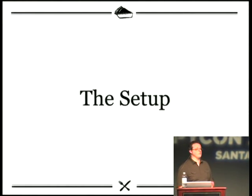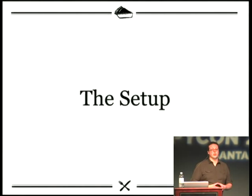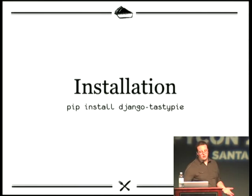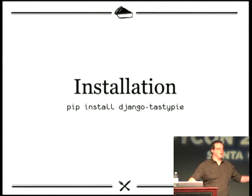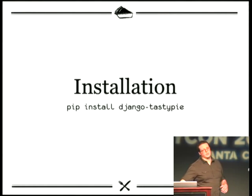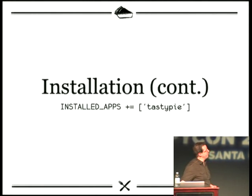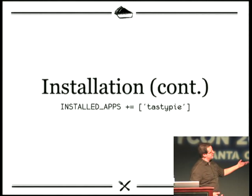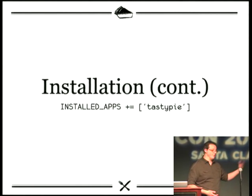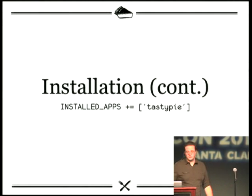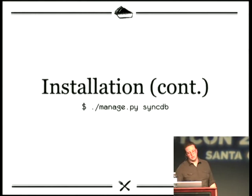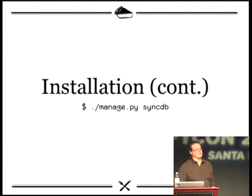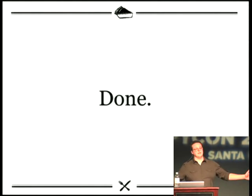For those who have never used TastyPie before, let's talk about a sample setup. Installation is pretty easy — you just pip install django-tastypie. You really ought to be using pip; please don't easy_install. Once installed, you simply add the TastyPie app to INSTALLED_APPS and run manage.py syncdb. That's it.